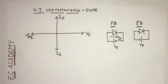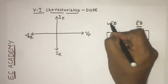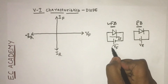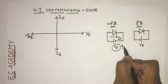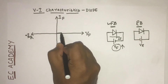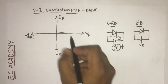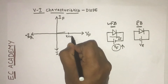When the diode is operating in forward bias condition, as we gradually increase voltage Vf, the current will be low until Vf reaches some voltage which we call the knee voltage.